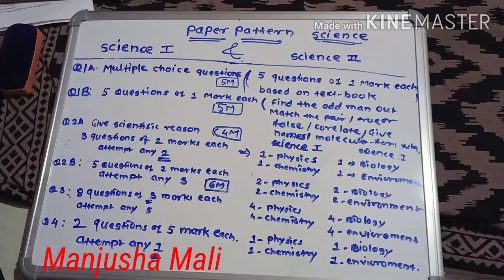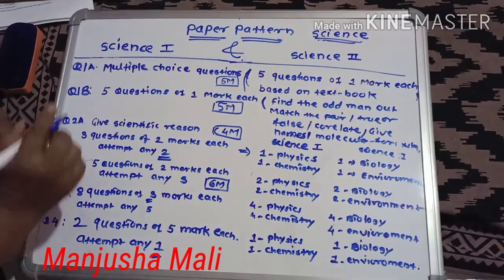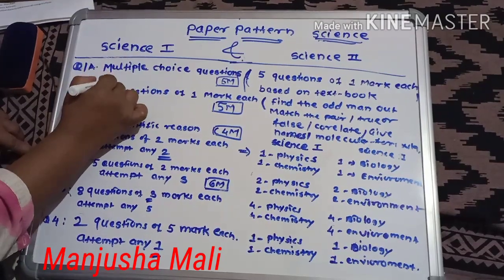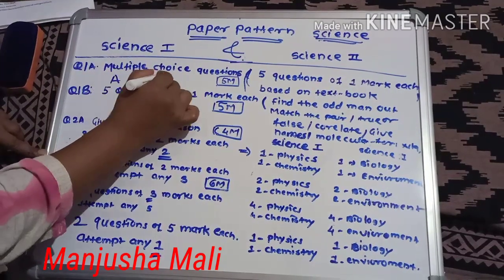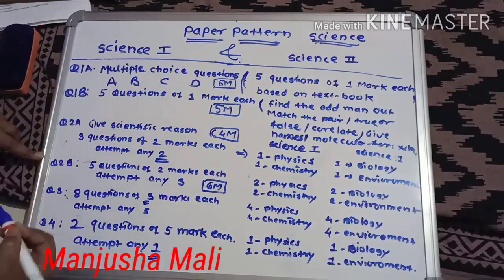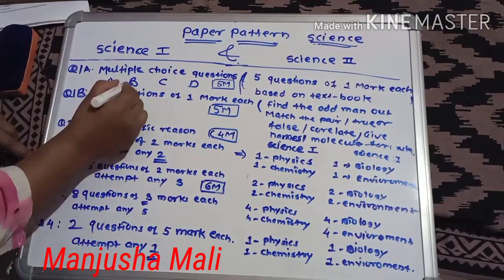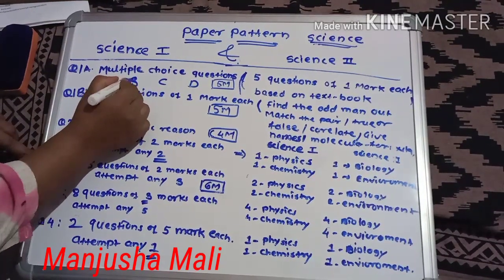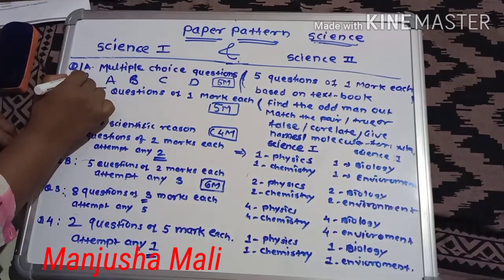Here four options will be given and you have to select any one option. The compulsion is that you have to write the correct alphabet. You have to choose from four options A, B, C, D. Suppose the correct option is B, then the answer is option B.